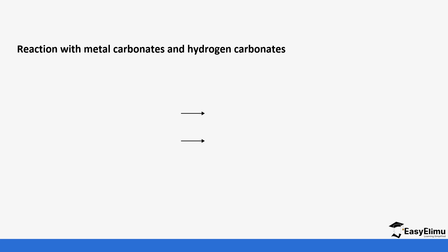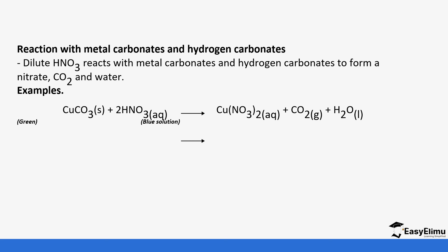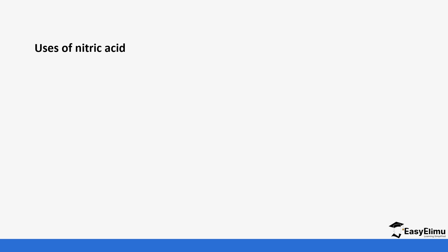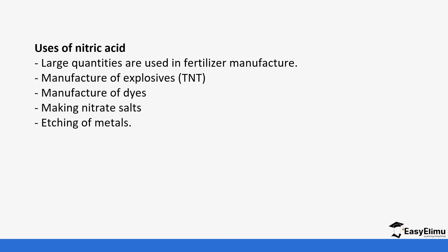Nitric acid also reacts with metal carbonates and hydrogen carbonates to form a salt, carbon dioxide, and water. For example, it reacts with copper carbonate to form copper nitrate, carbon dioxide, and water; and with sodium hydrogen carbonate to form sodium nitrate, carbon dioxide, and water. Some uses of nitric acid include: manufacture of fertilizers such as ammonium nitrate, manufacture of explosives, and making dyes.